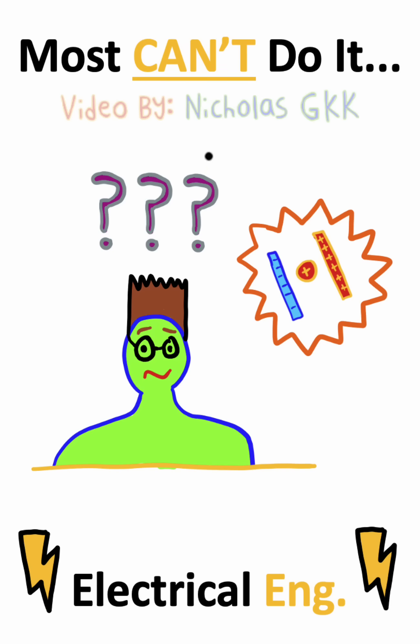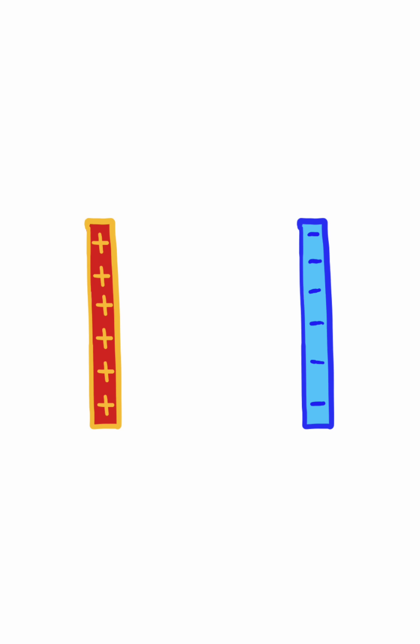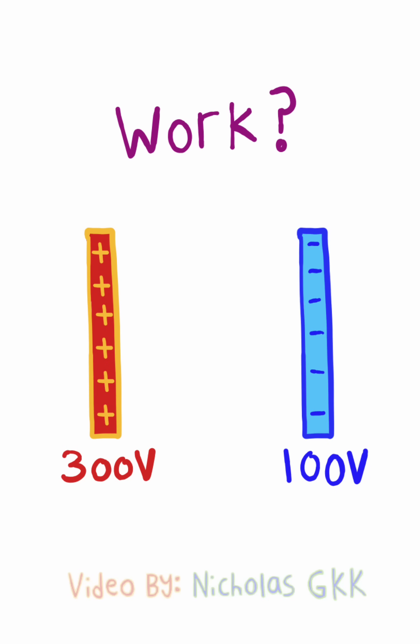This problem is somehow very challenging, yet very simple at the same time. So here we have these two charged plates at a high and low potential respectively, and we need to calculate the work it takes to move a charge across these plates.